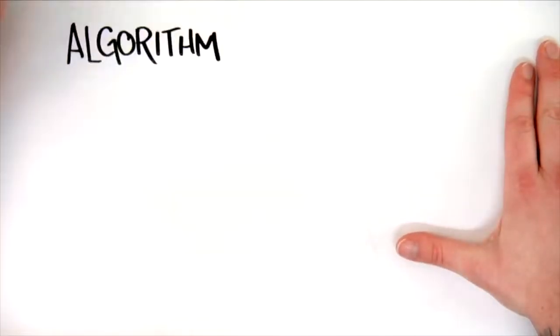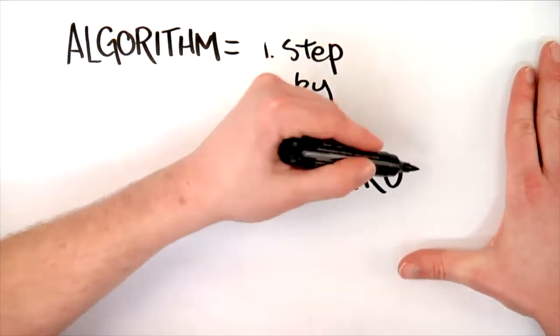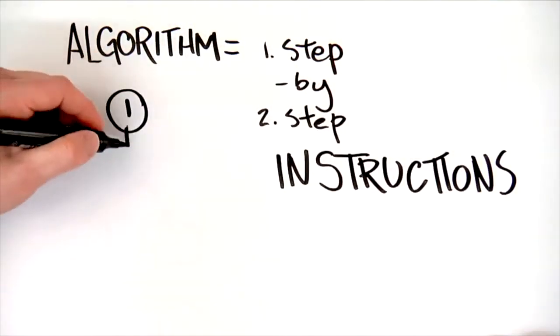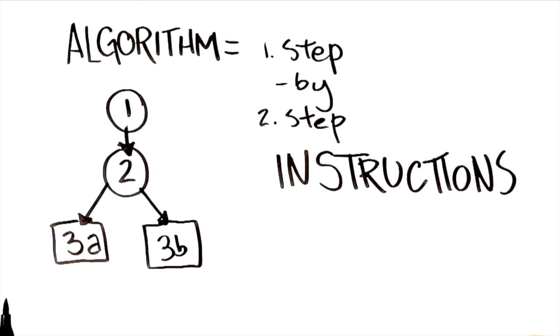Algorithm. The step-by-step method that a computer uses to complete each task is an algorithm. Since a computer understands numbers best, the steps are put together as mathematical equations. For example, if x equals 1, then... and it goes on like that.